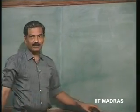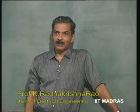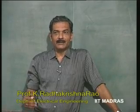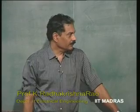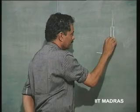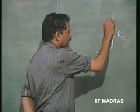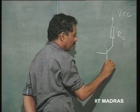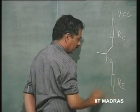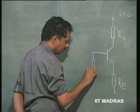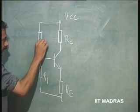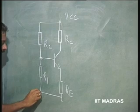We will continue further with discussion about transistor amplifiers. We had discussed transistor biasing. We know how to bias a bipolar junction transistor so that it is in the active region and we also know how to bias it in a stable fashion. Now, some variations in this — we have put, in general, a resistance through a supply voltage R1, R2.